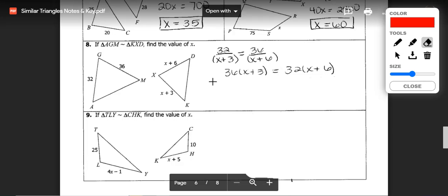Then we would need to distribute, leaving us with 36X plus 108 and 32X plus 192.